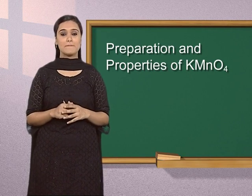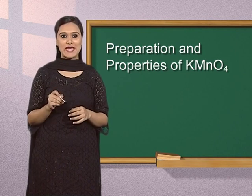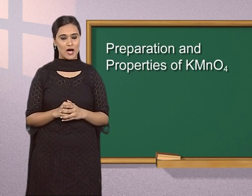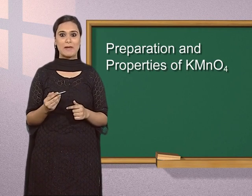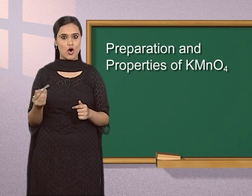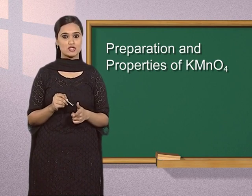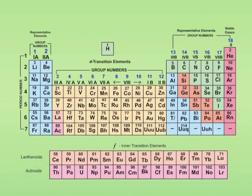Manganese present in potassium permanganate is located in the D block of the periodic table. Now we will study about the oxidation states of manganese in various oxides and its effect on the ionic character of its oxides and their acidic nature. We will discuss the first episode of transition elements.